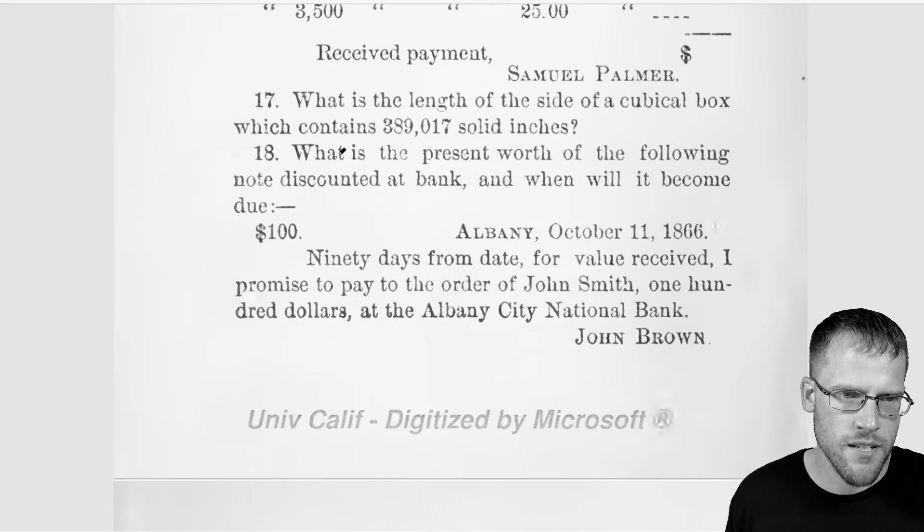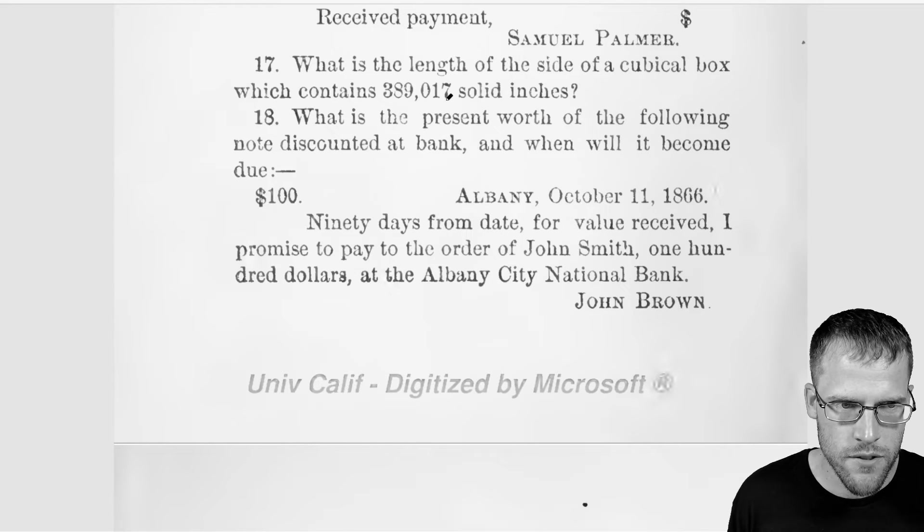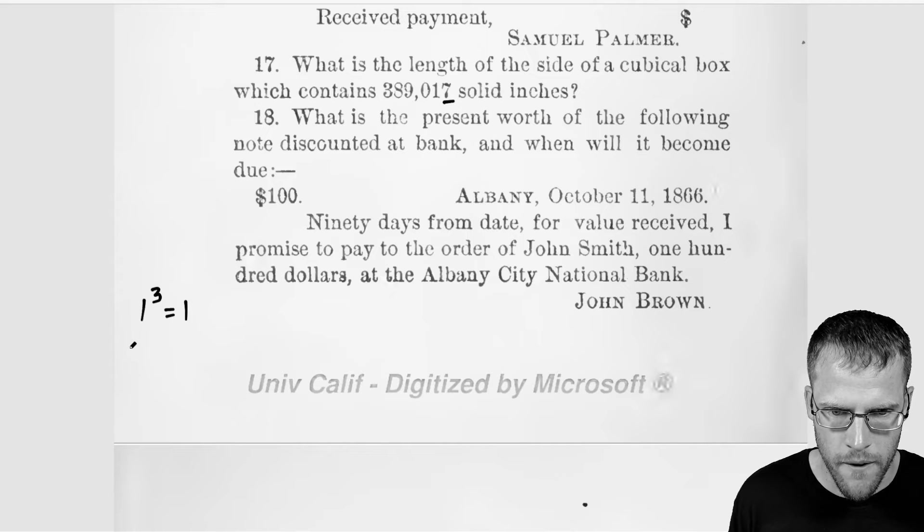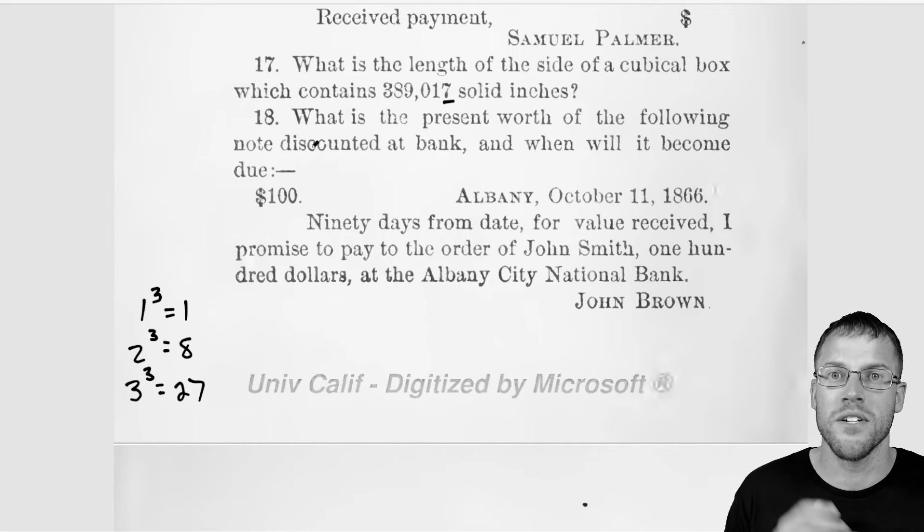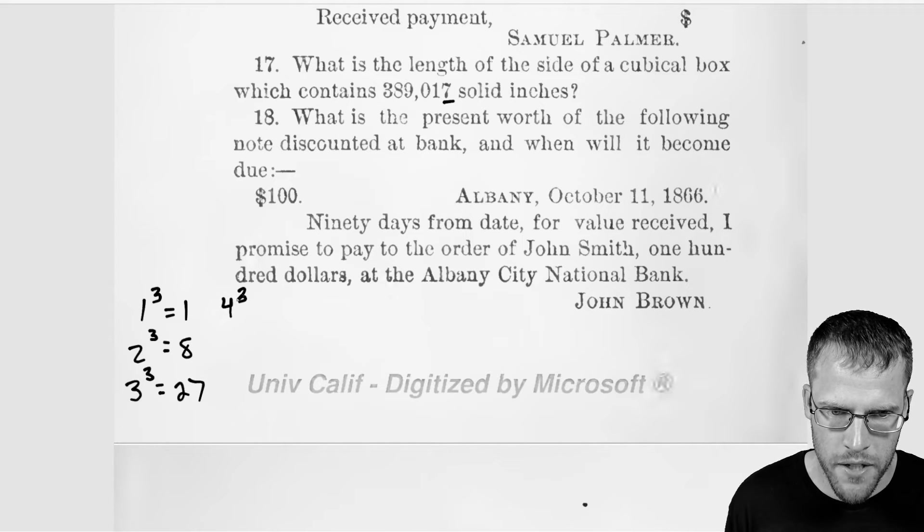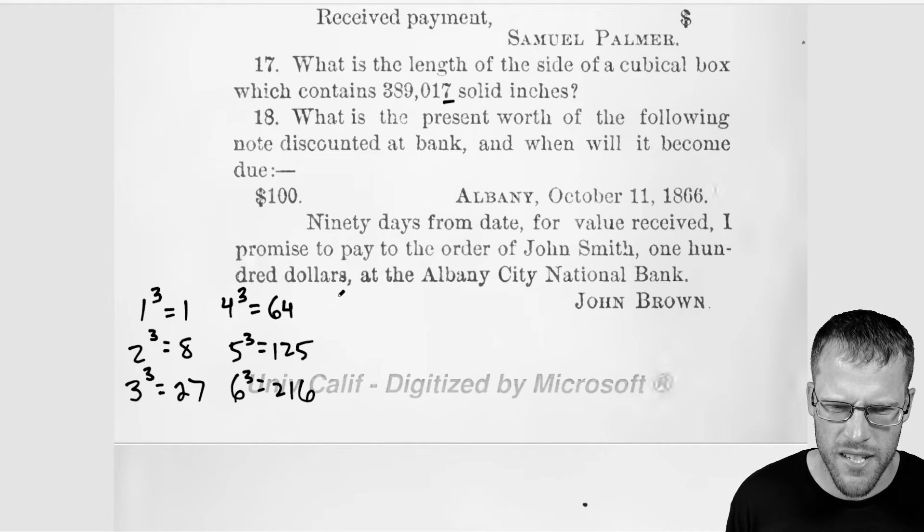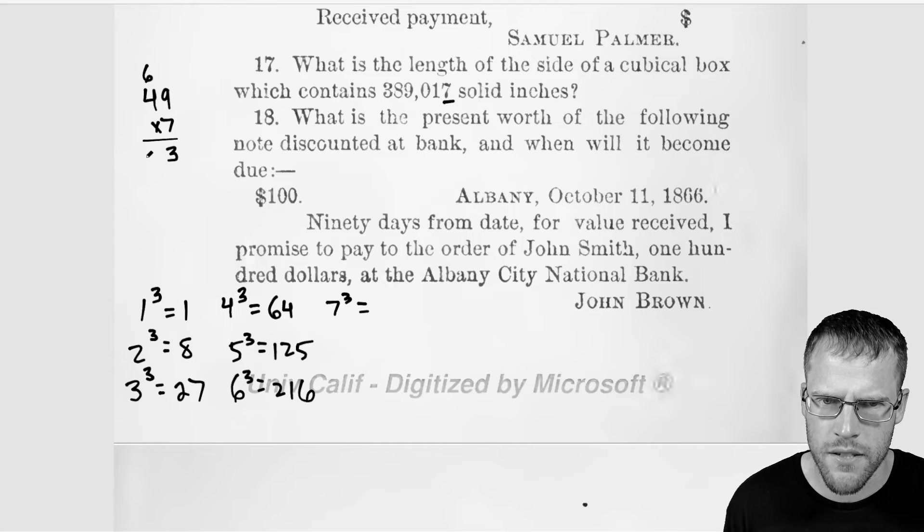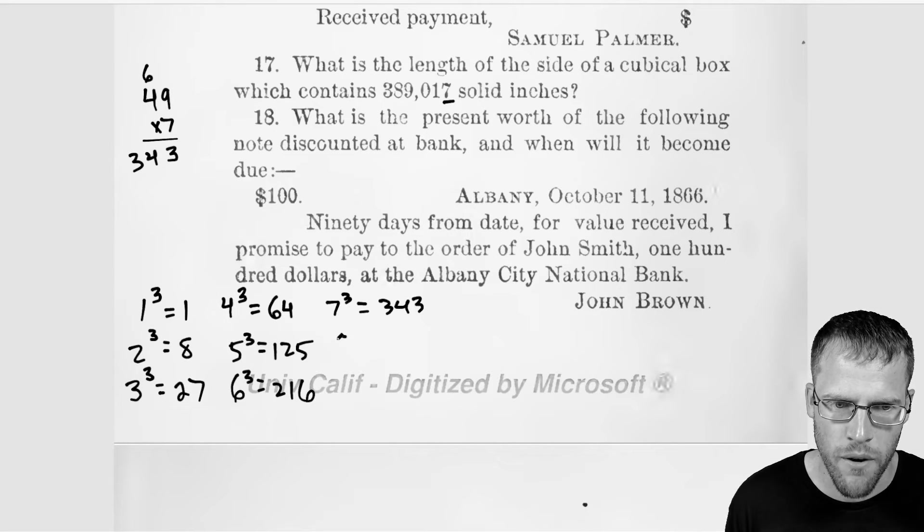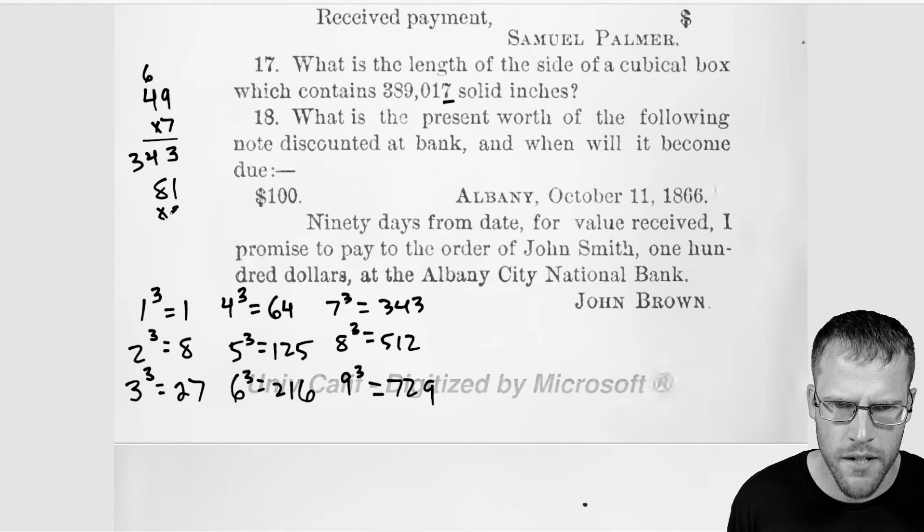What is the length of a cubicle box, which contains 389,017 solid inches? Okay. So for this one, what I'm imagining here is we're taking the cube root of this number, but how do we do this without a calculator? Oh no. So what I'm paying attention to here is the seven. And I look at my perfect cubes. So I have one to the third power is one. Two to the third power is eight. Three to the third power is 27. Okay. So you see how this ends in seven? Like right away, I'm thinking whatever the number is, it's going to end in three. And if I really wanted to be sure, I could find the other perfect cubes here. So four to the third power is 64. Five to the third power, these quickly get out of control is 125. Six to the third power is 216. Seven to the third power, I believe that's 343.